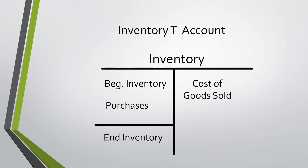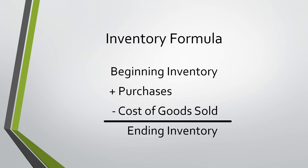We add purchases because that is an increase in inventory, and we subtract cost of goods sold because that is a decrease — we no longer have that inventory because it has been sold. Shown on this slide is the same formula just without the T-account: beginning inventory plus purchases minus cost of goods sold gives us ending inventory.